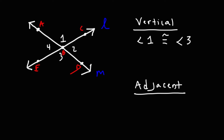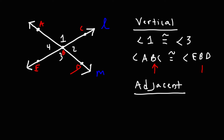You can also call angle one as angle ABC, and angle three is EBD — or you could say DBE. Notice that these two angles share a common vertex located at point B. So vertical angles share a common vertex, they're congruent, and they exist across from each other. Angles one and three are vertical angles, and also two and four are vertical angles.